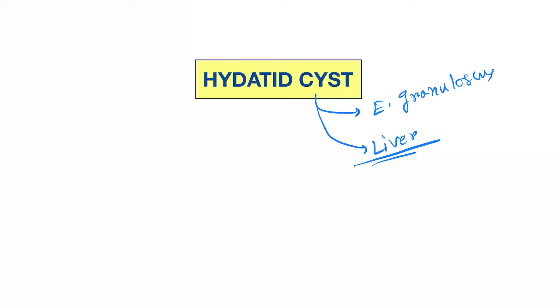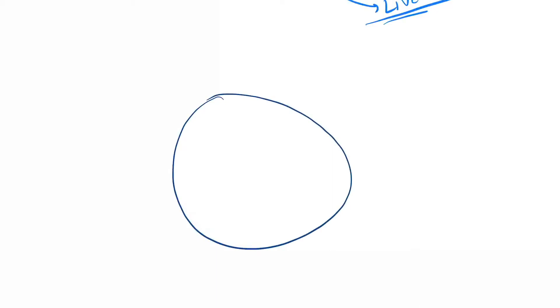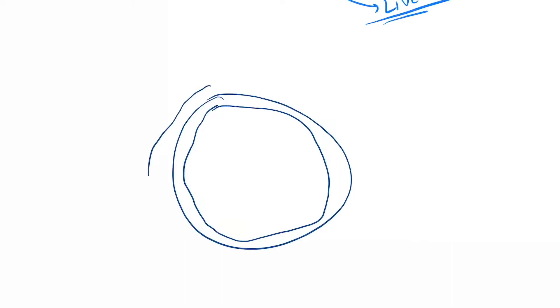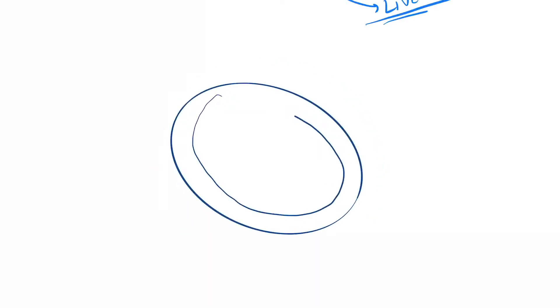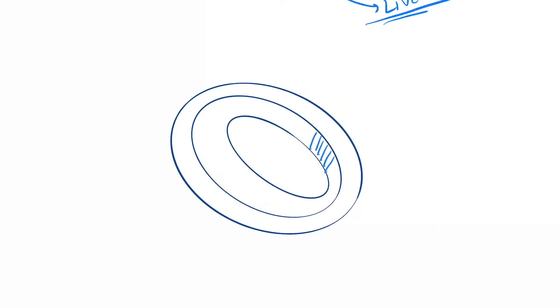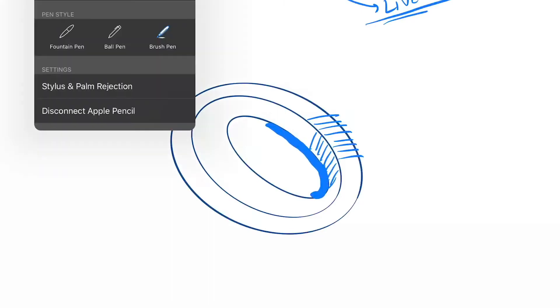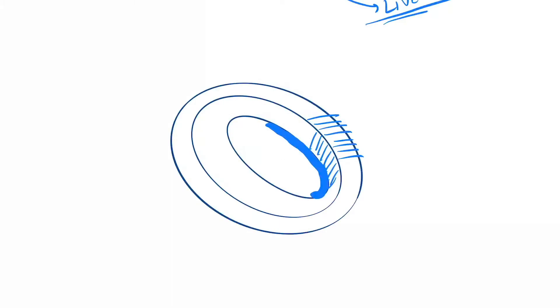The histopathological identification is totally based on the structure of the hydatid cyst. So this is the hydatid cyst and these are the layers. Let me draw it again. This is the intermediate layer, this is the outer layer, and this is the inner layer.